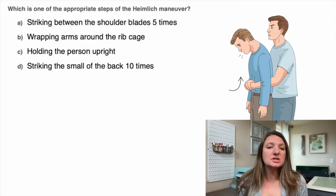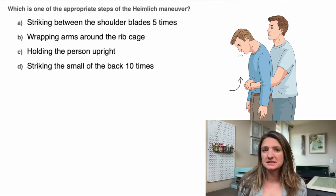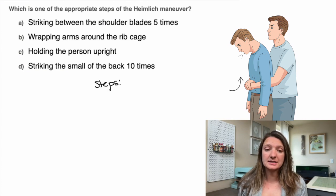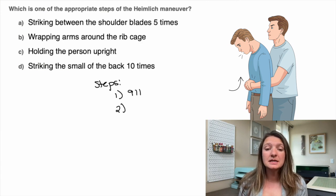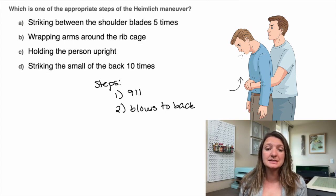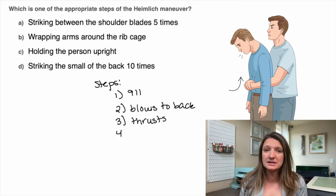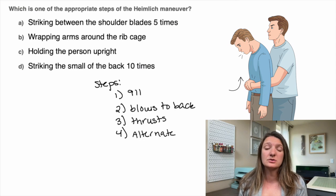Question one: which is one of the appropriate steps in the Heimlich maneuver? Let's talk about all of the steps. Step one is going to be call 911 because it's an emergency. Step two is going to be striking the back with your hand in between the shoulder blades. Step three is when you're going to have those abdominal thrusts up — take your hands, make a fist, and thrust upward to try to get that out. Step four is going to be when you alternate blows and those thrusts up.